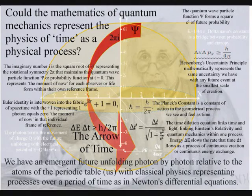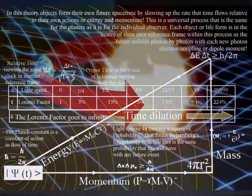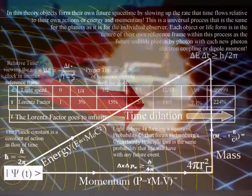In this theory, Einstein's relativity and Heisenberg's uncertainty principle are both part of the same universal process.